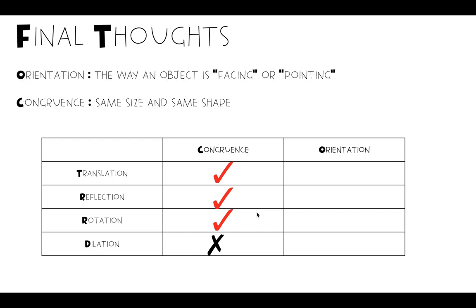Orientation is the way an object is facing or pointing. So translation keeps our orientation. It preserves it because it just slides, but a reflection and a rotation do not. A reflection flips our image and a rotation turns our image. So those two things are going to change the way an object is facing. A dilation though does preserve your orientation.